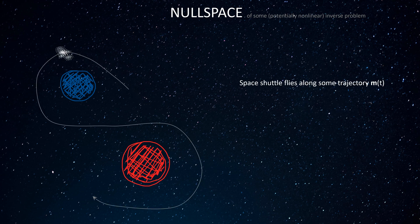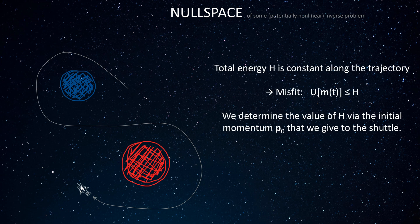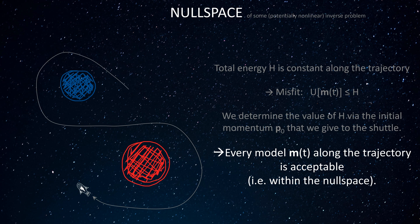The shuttle again flies along some trajectory corresponding to artificially time-dependent models m of t. Again, the total energy h is constant, meaning that the misfit all along the trajectory is bounded above by h, the value of which we are free to determine by our choice of an initial momentum p0. This means that every model m of t along the trajectory is acceptable — it is located within the null space of our inverse problem.